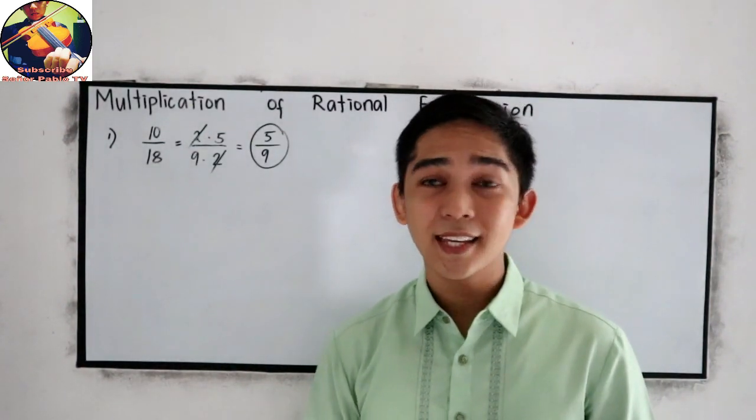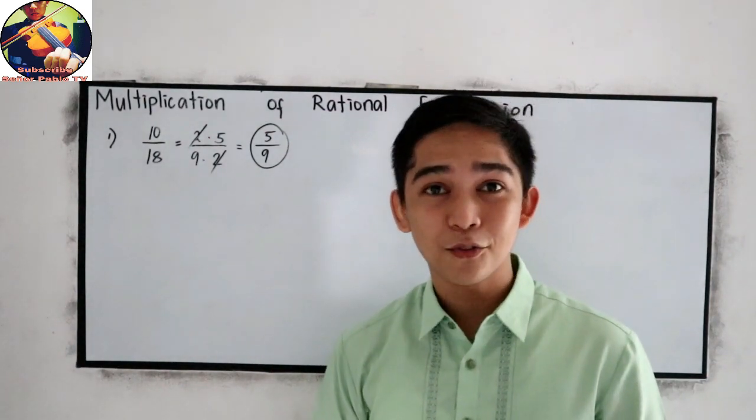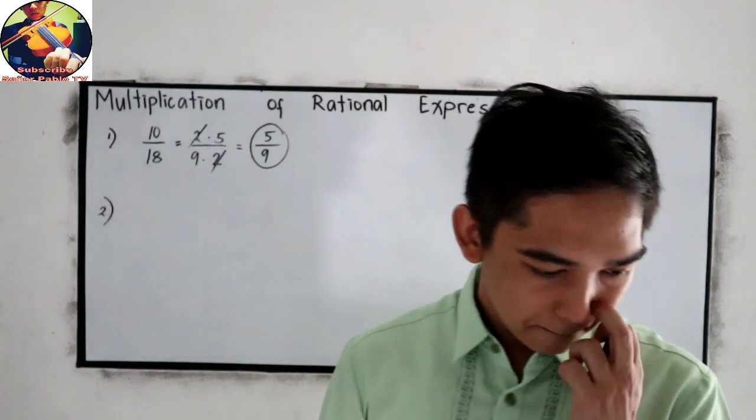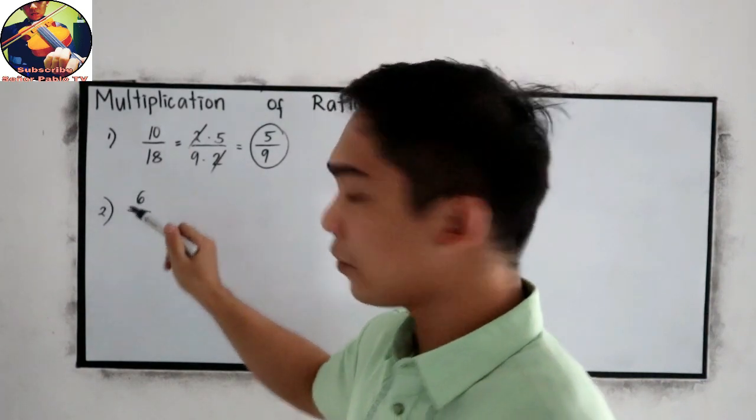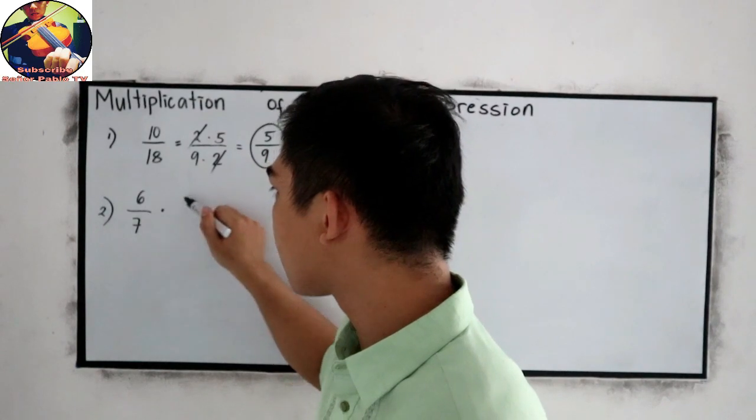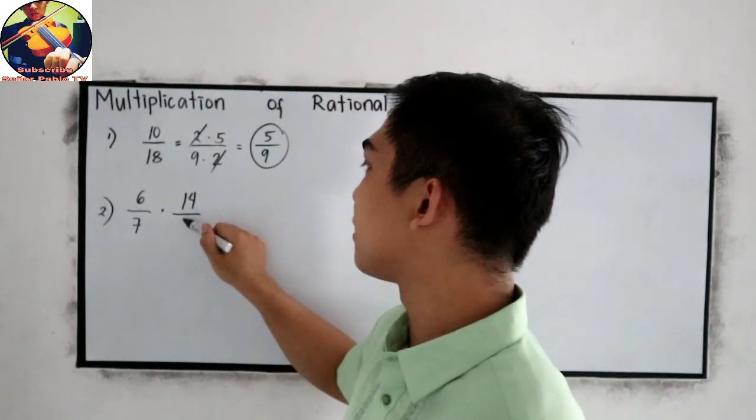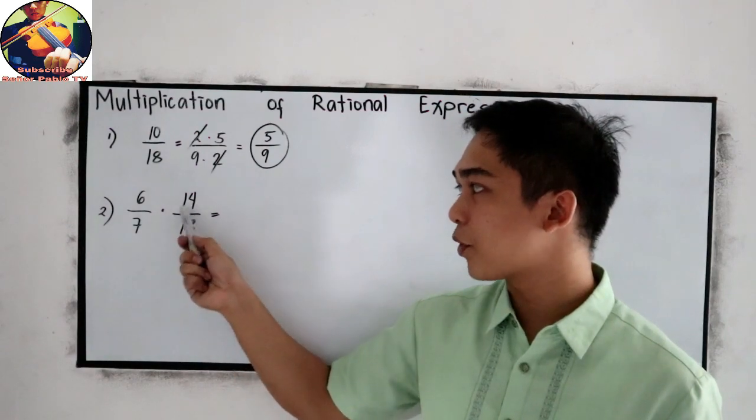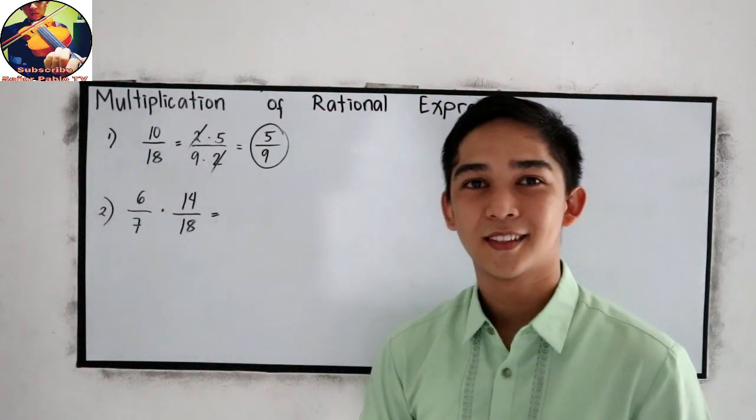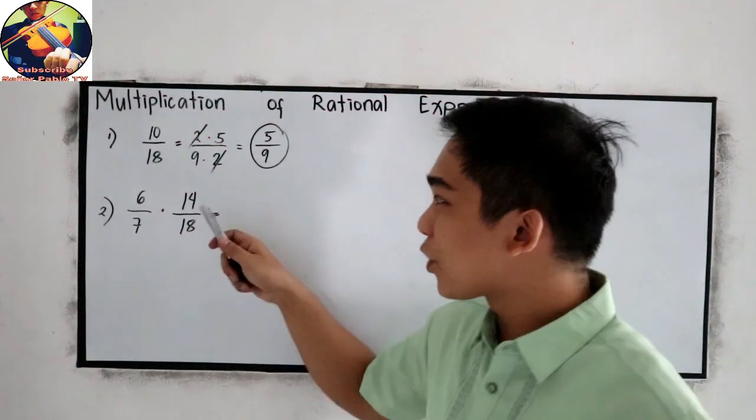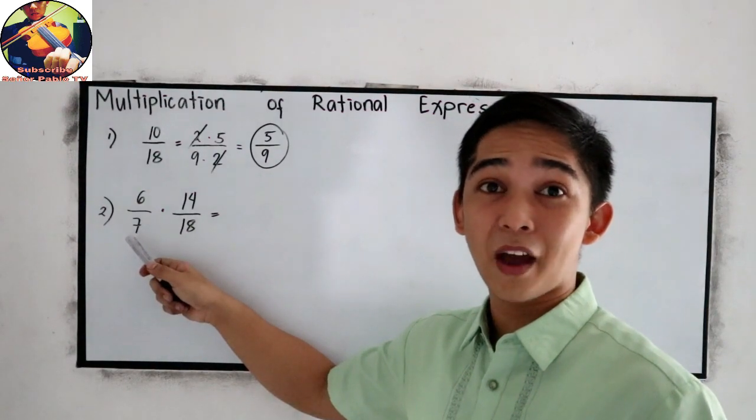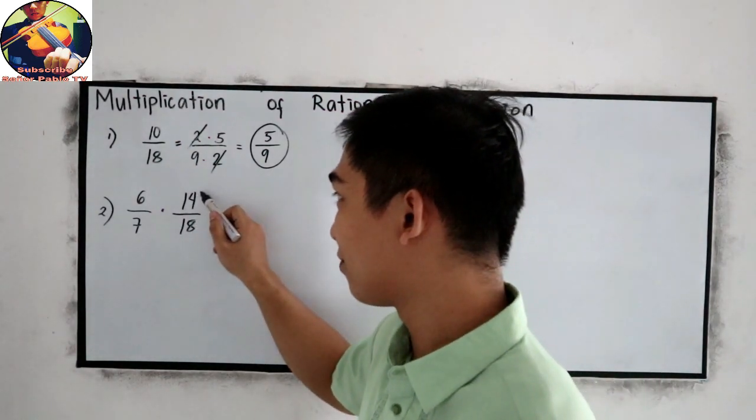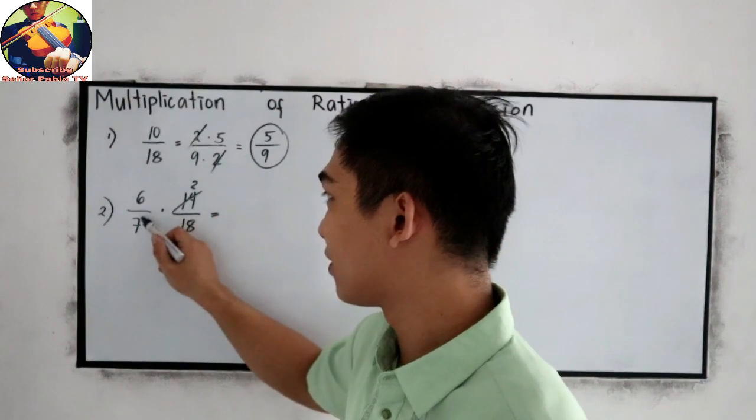Now let's try that cancellation technique in our multiplication of rational expressions. Let's say we have 6 over 7 times 14 over 18. Let us use the cancellation method. 14 and 7, if I am going to divide 7 into 14, that will give me 2. So this will become 1.